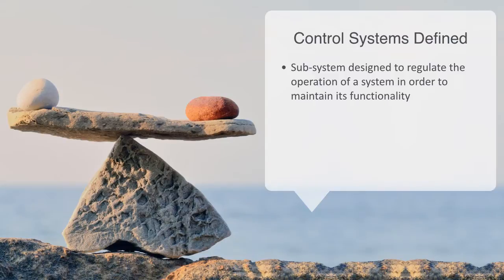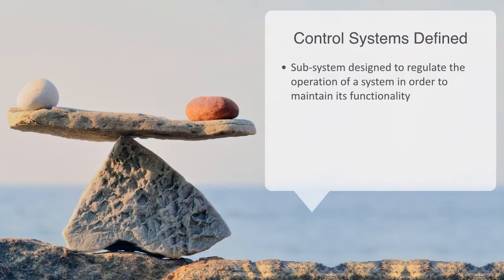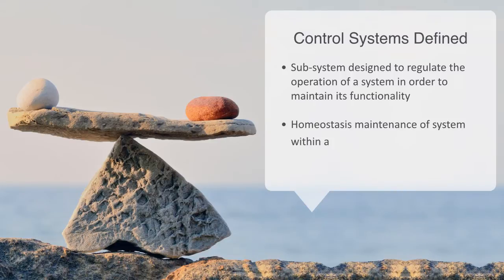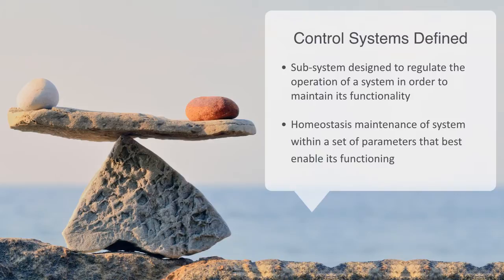Within systems theory, this preservation of a stable or equilibrium state to a system operation is called homeostasis. On its most basic level, homeostasis is the maintenance of a system within a given set of parameters or environmental conditions that best enable its internal functioning. Homeostasis is ultimately at the core of what all types of control systems are designed to do.